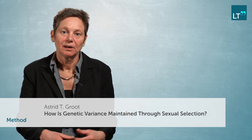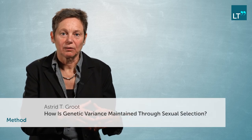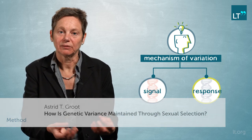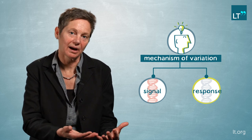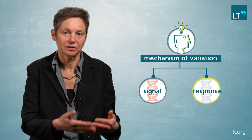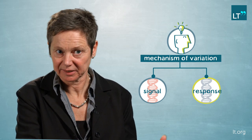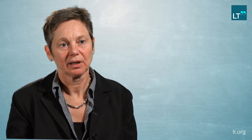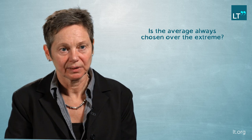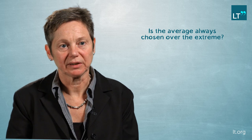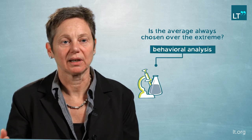How do we approach this question? First of all, we try to understand the mechanisms of the variation in the signal and the variation in the response. We do that by identifying the genes underlying the signal variation and the genes underlying the signal responses. We have also started to question the general assumption that the average is always chosen over the extremes, and we address this by detailed behavioural analysis in the lab and in the field.